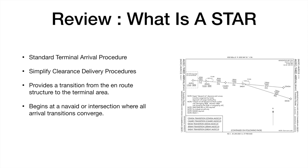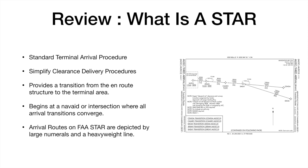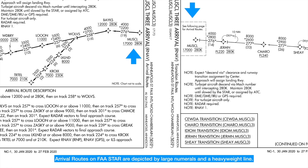The STAR itself will begin at a NAV aid or an intersection where all the arrival transitions converge. The arrival routes on the FA STAR are actually depicted by large numerals and heavyweight lines. On the right we have the transition routes; on the left we have the arrival routes — and notice those are two pages. You look at the first page on the right, then the second page on the left. You can see the heavier weight line to the left there between Muscle and Bakes, showing the arrival, with transitions to the right over to the completion of the arrival on the left.